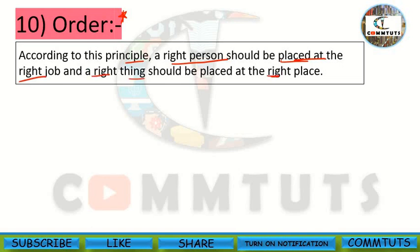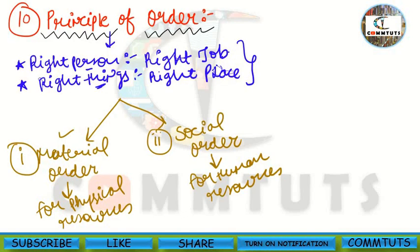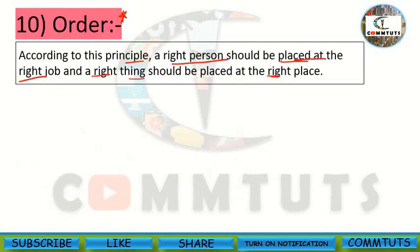This is a principle that needs careful understanding — the words appear similar but have distinct meanings. It should be clear that the right person must be placed on the right job — the job that is perfect for them. Similarly, right things must be placed at the right place. Order is of two types: material order, for physical resources, and social order, for human resources.